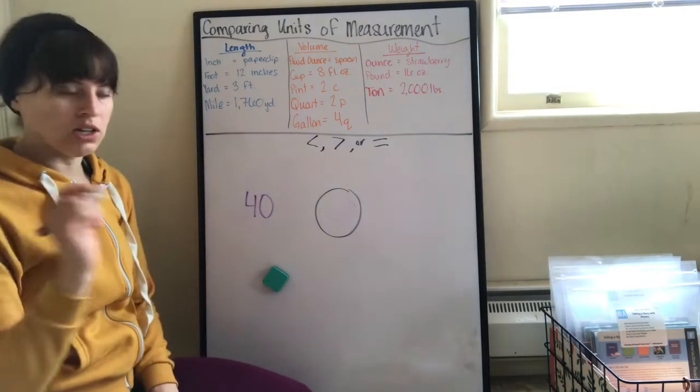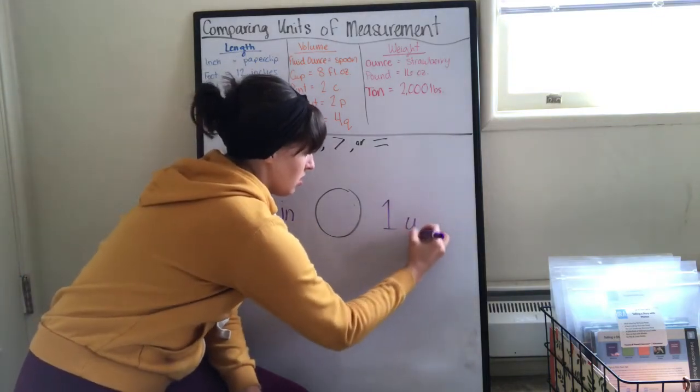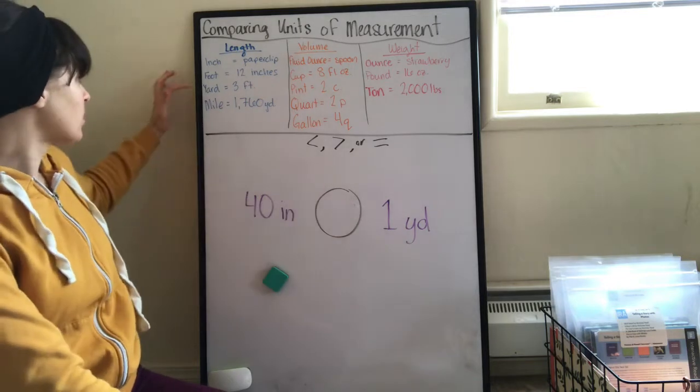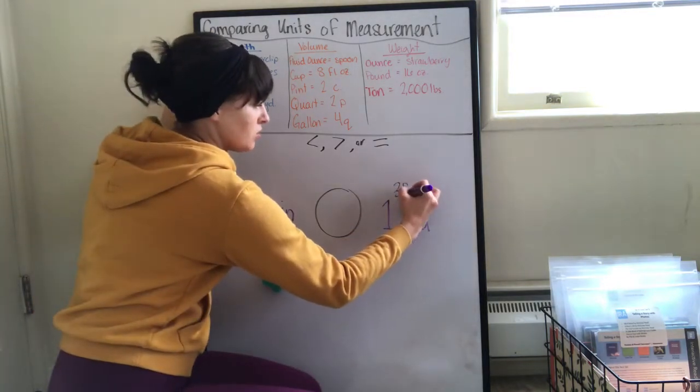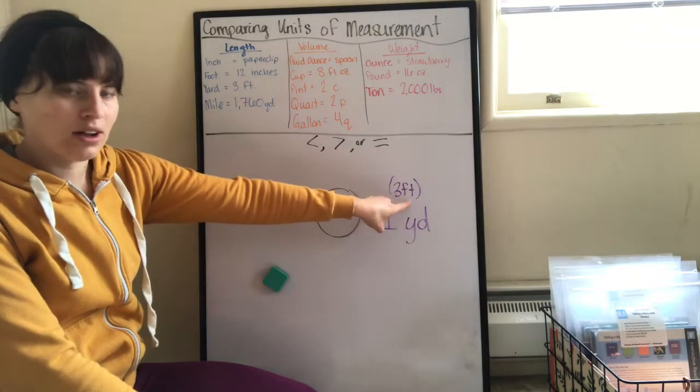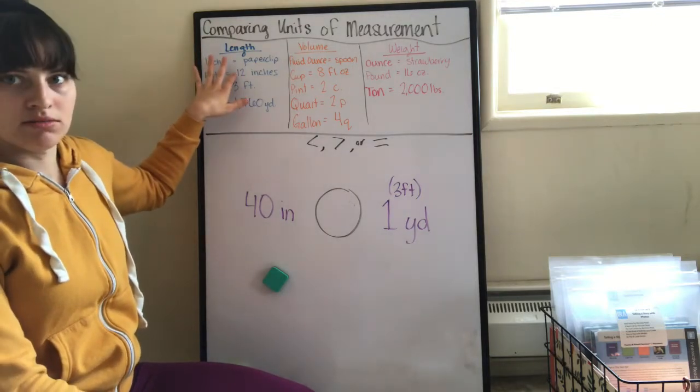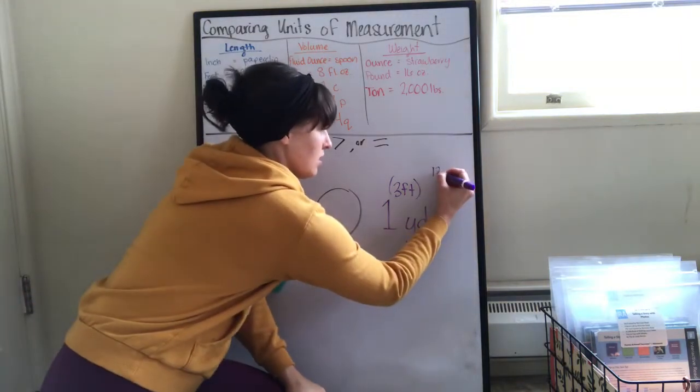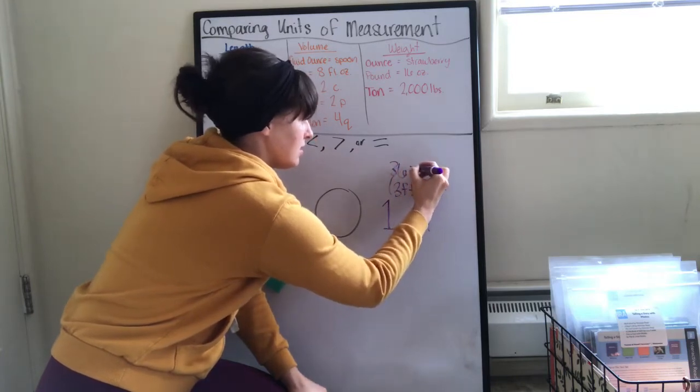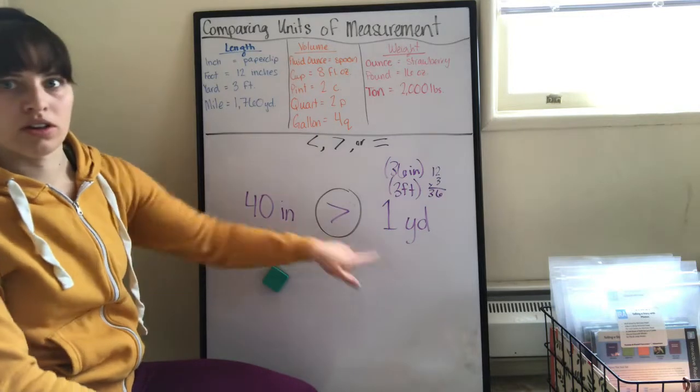Let's say we have forty inches and one yard. I'm going to look at the yards. One yard equals three feet, but that doesn't help me because this is inches and that's feet. So now I need to convert this into inches. One foot is twelve inches, so I need to do that three times. Twelve times three equals thirty-six inches. So what's bigger, thirty-six inches or forty inches? Forty inches is bigger than one yard.